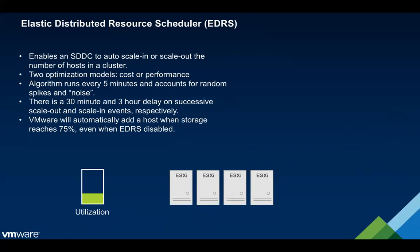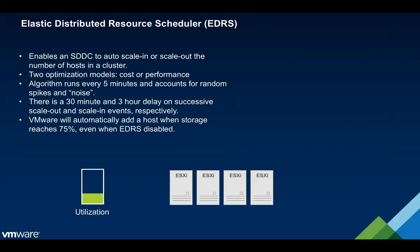If you choose optimized for cost, we conservatively scale out — we set the thresholds higher and aggressively scale in. If you choose for performance, we do the exact opposite. Once EDRS is enabled, we monitor CPU, memory, and storage of the SDDC. Once you cross a certain threshold, we trigger a scale-out operation and automatically add a host. On the flip side, if usage drops below a certain threshold, we trigger a scale-in operation and remove hosts.